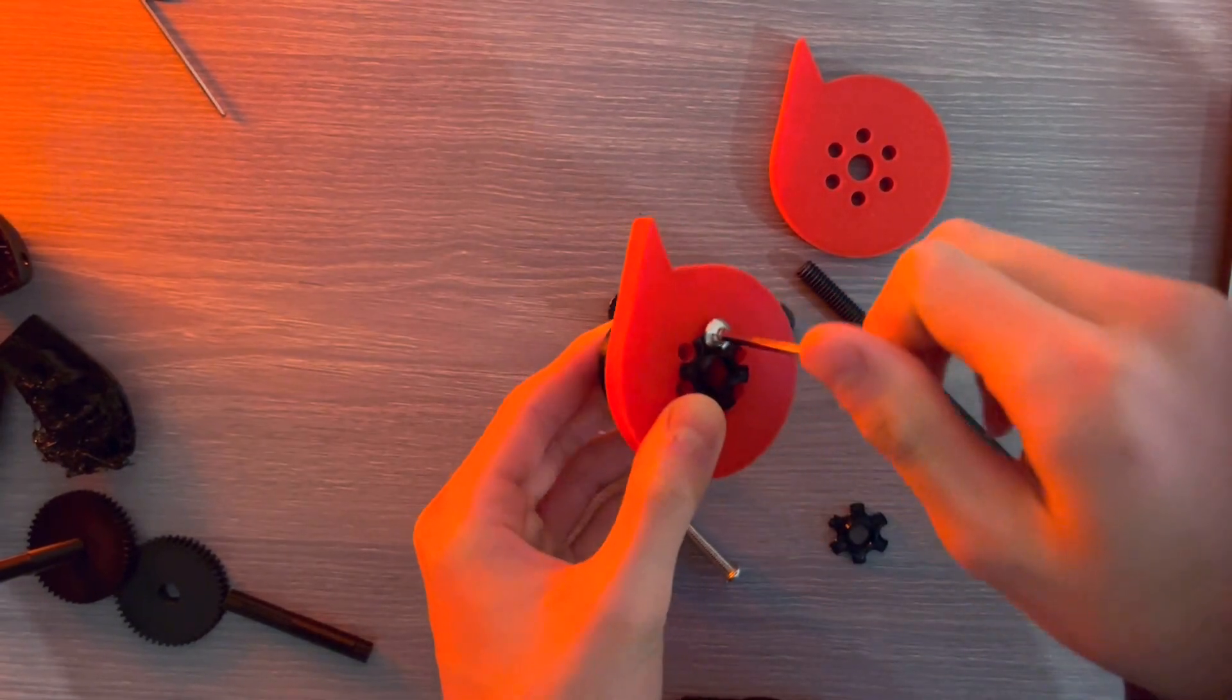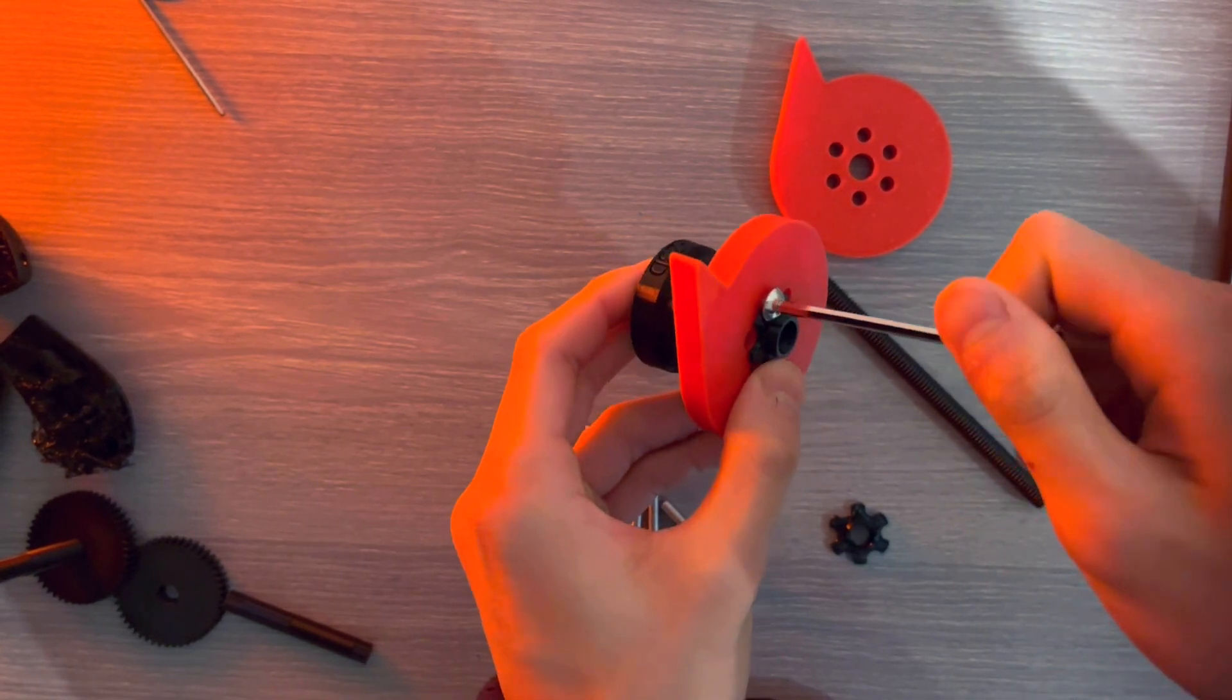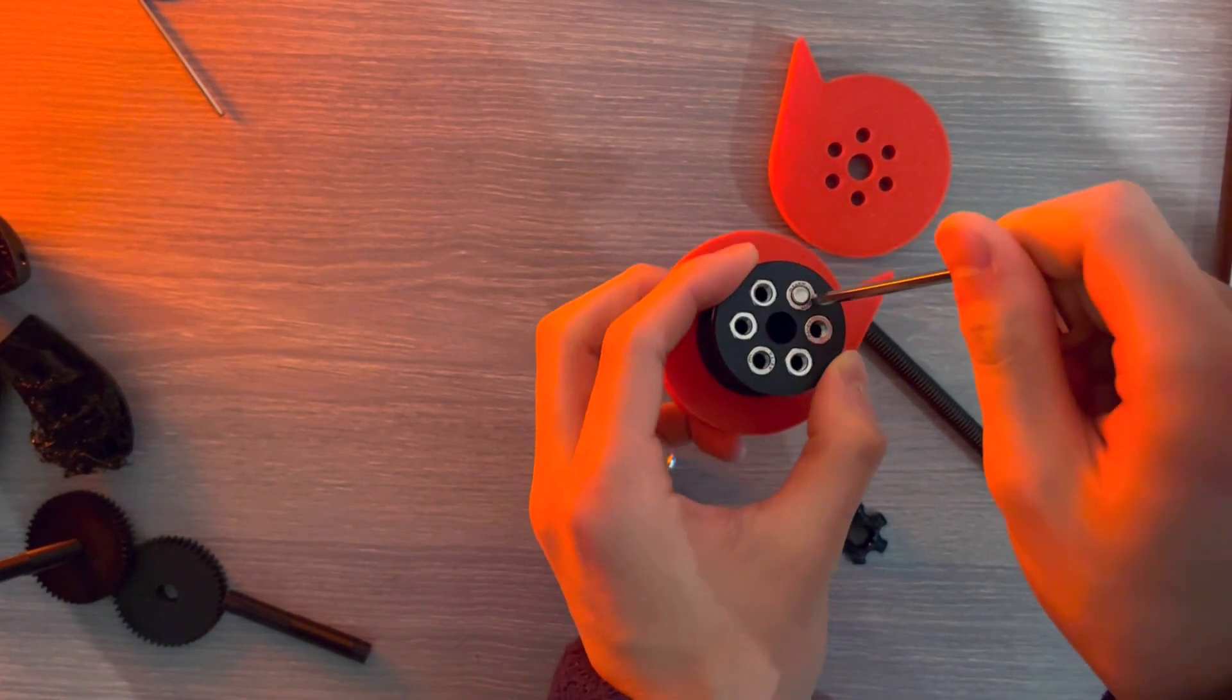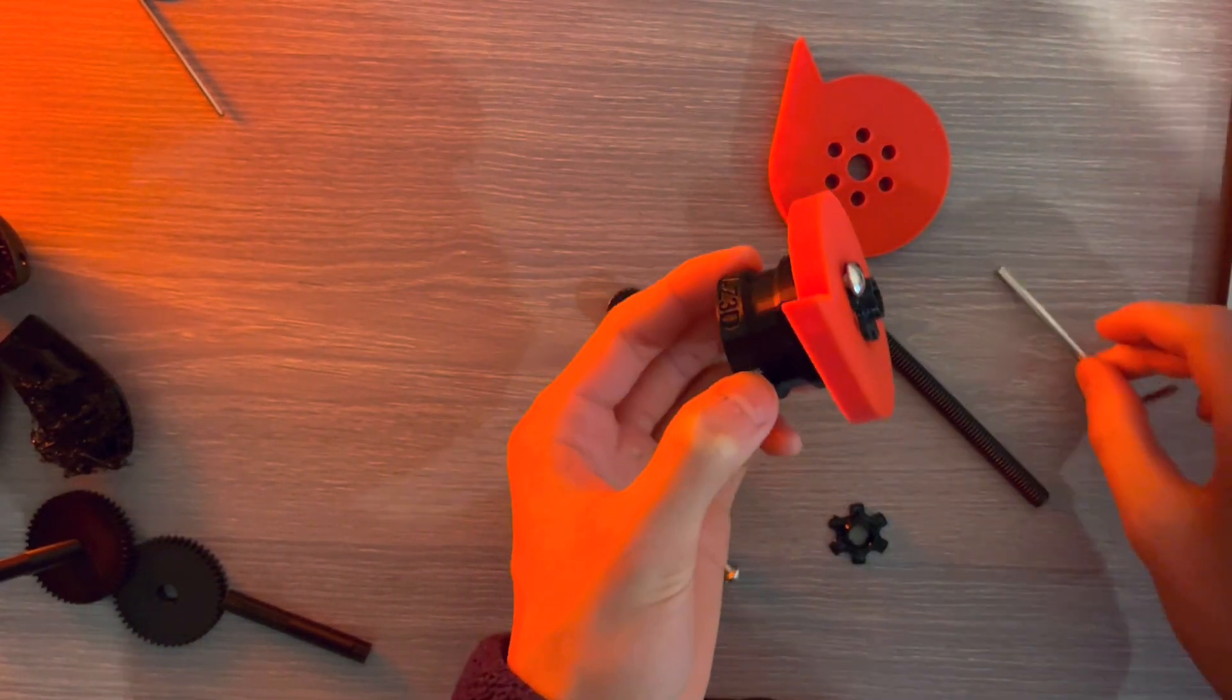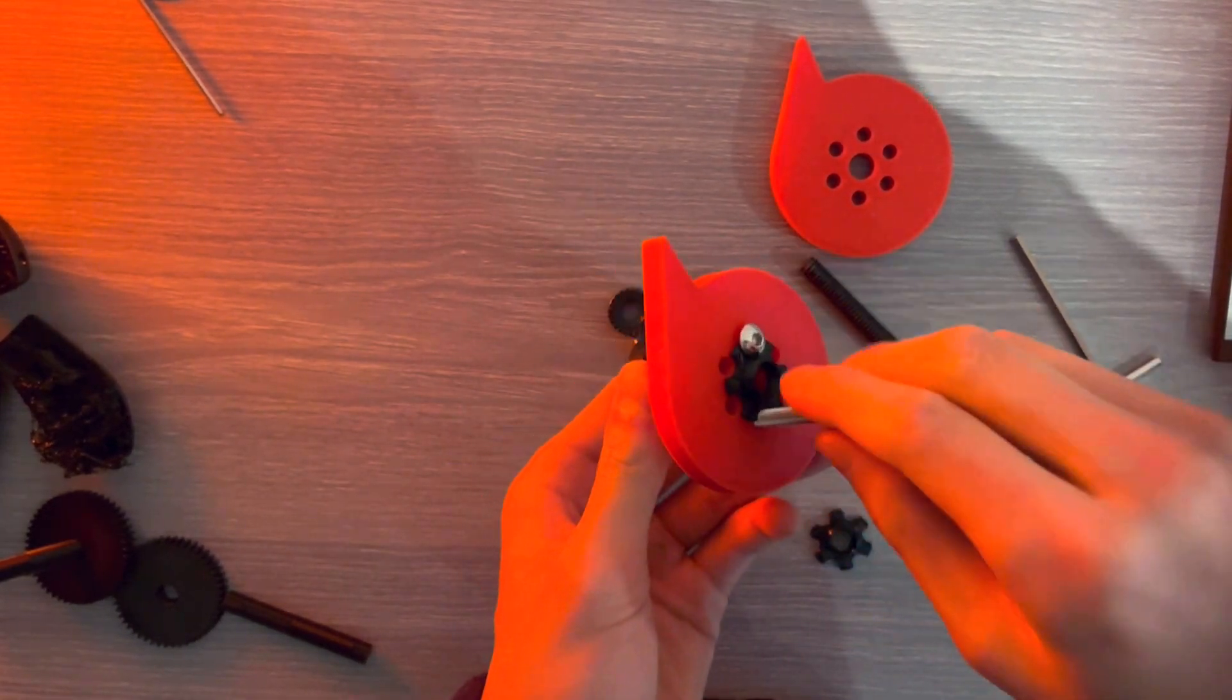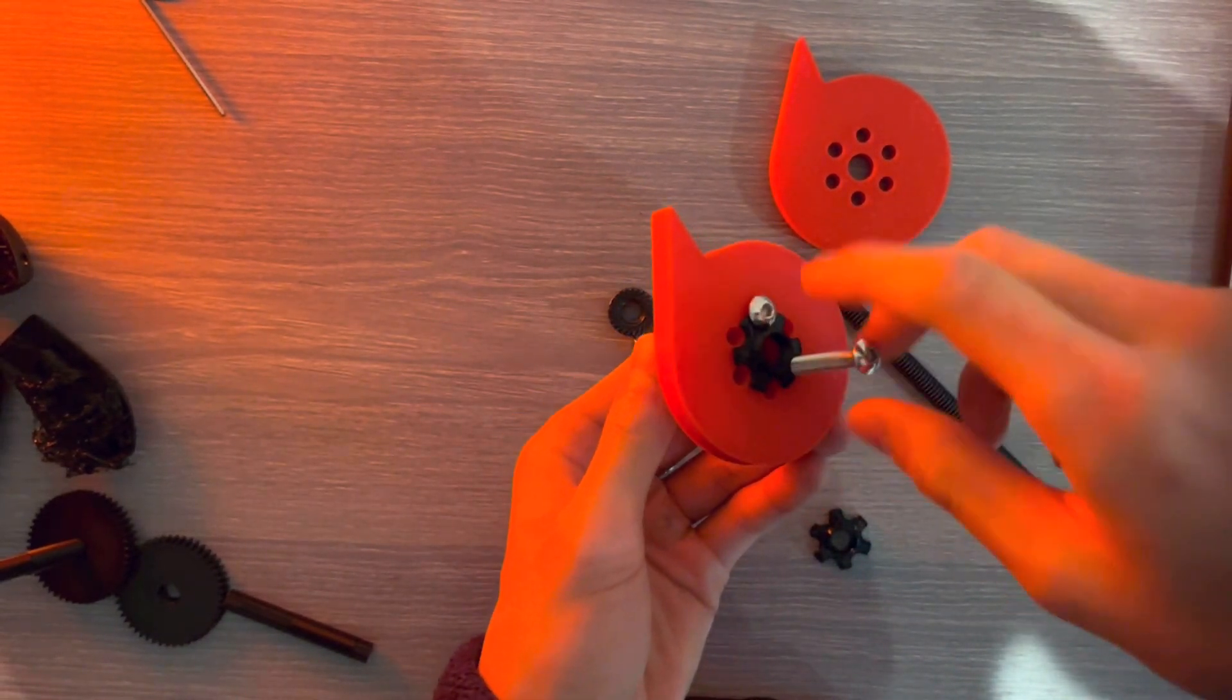You can see that this thread went through the nut right there, and it's also going through the other side. So this entire screw is running the entire length of the weapon hub, and we can repeat this for the other three screws.